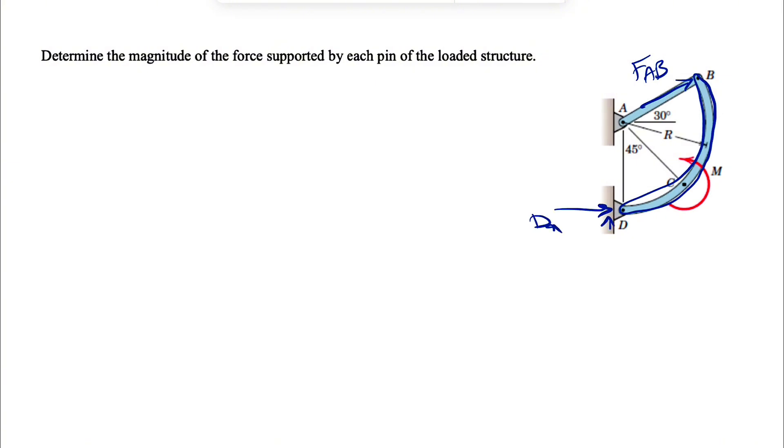We can consider two components, one for X, one for Y: DX and DY. If we just do the sum of all moments about point D, we can get rid of all the unknowns at D, and we can find FAB pretty easily.